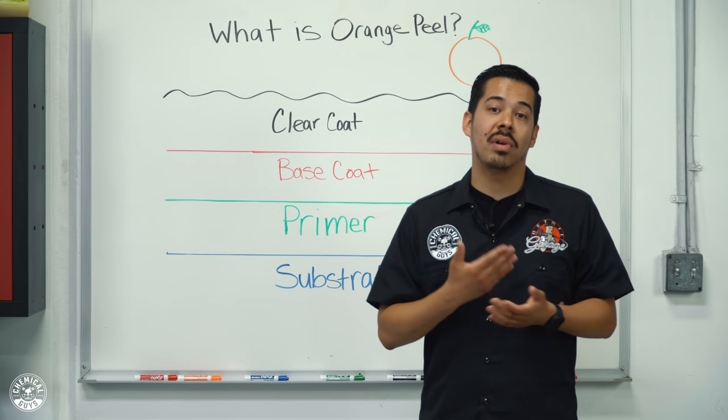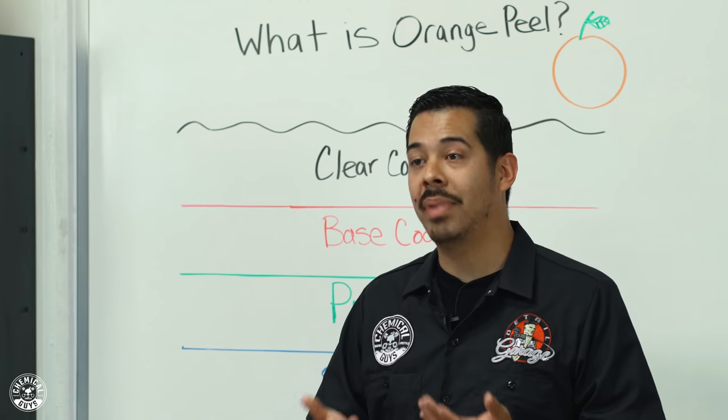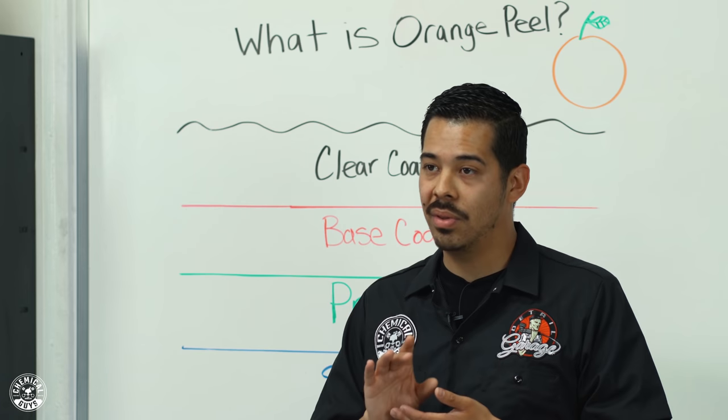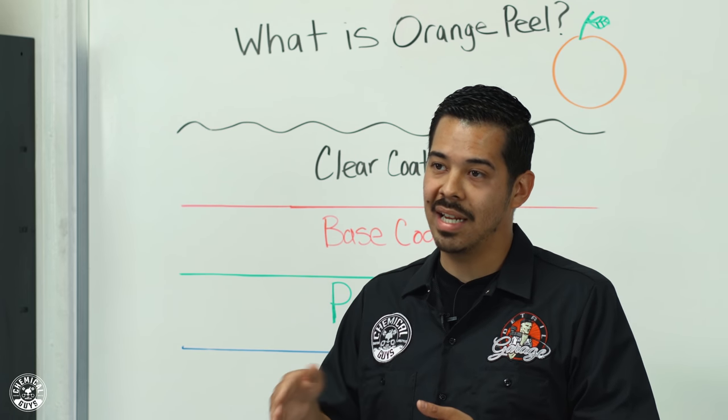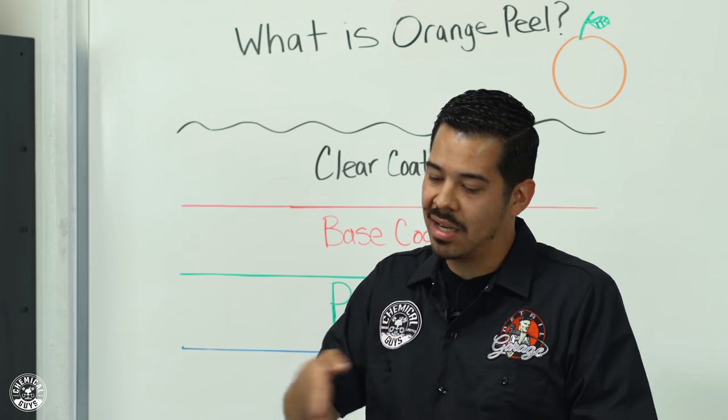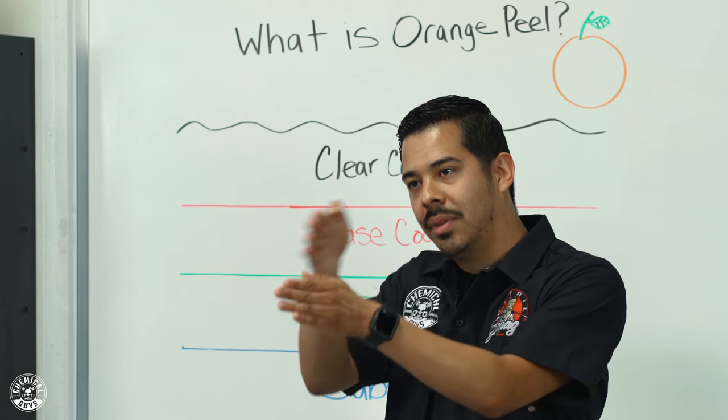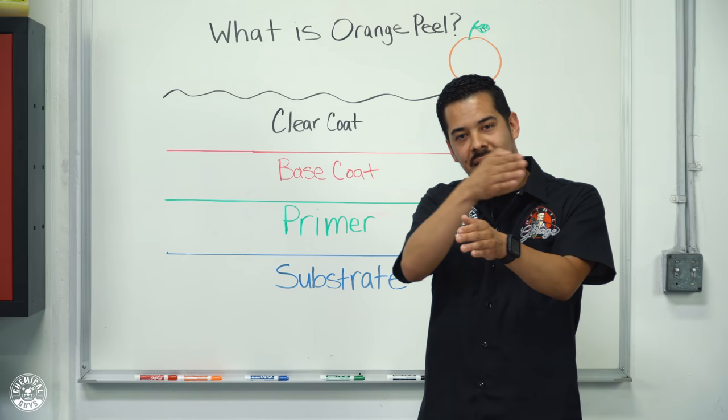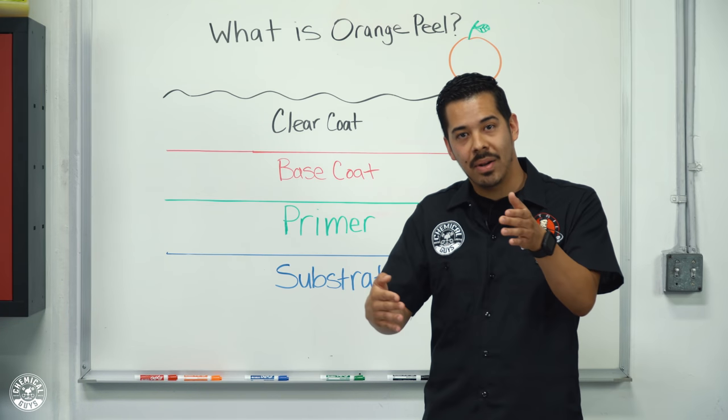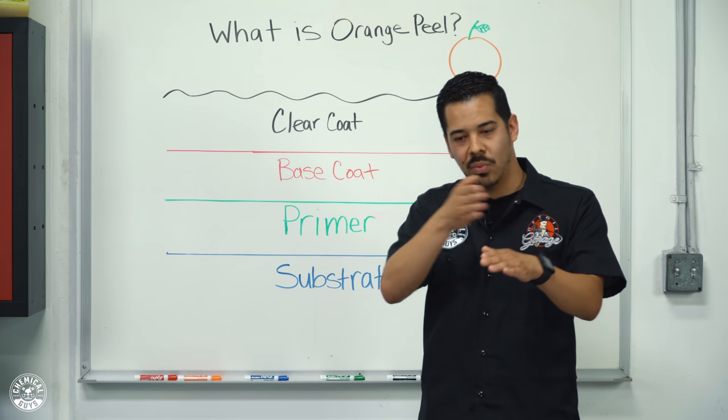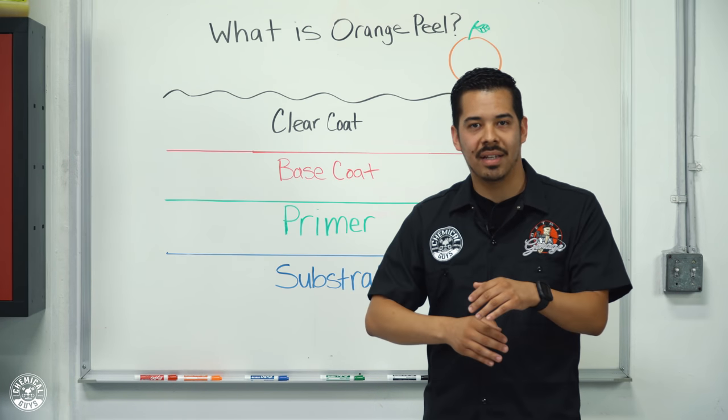Another reason that it could be is that the spray nozzle that they're using to spray the paint or clear coat is too thin or too small, and it actually causes it to not cover as much coverage. And when they're spraying and overlapping their painting, it doesn't necessarily flow with the whole pattern of the panel and ends up creating this weird striping effect.